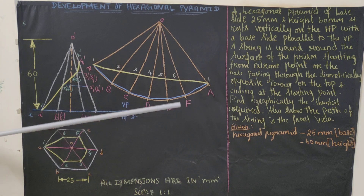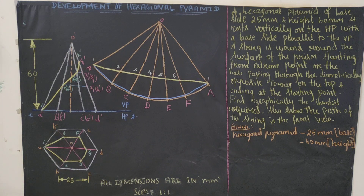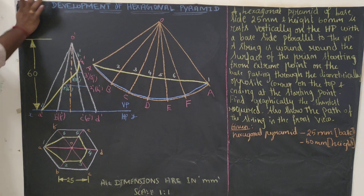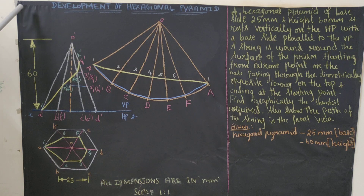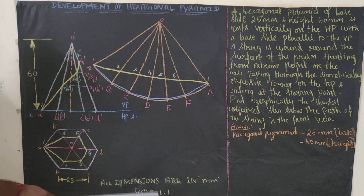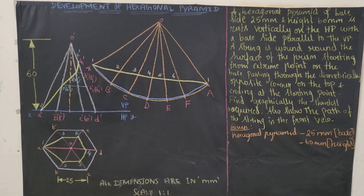We have traced the string in the front view as well as the top view, which is what was asked. For the heading: text height is 10 mm, write two lines - all dimensions are 8 mm, scale is 1:1, text height 5 mm. Use a pro circle for the question number. For the border: use HB pencil, 20 mm from left, 10 mm from top, right, and bottom so the diagram looks good.